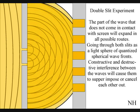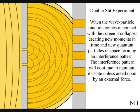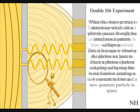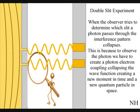When the observer turns on a detector to determine which slit a photon passes through the interference pattern collapses. This is because to observe a photon we have to create a photon electron coupling collapsing each wave front into a new quantum particle that will have its own position in space and time.